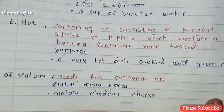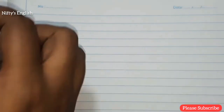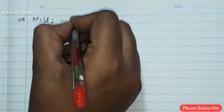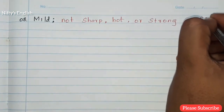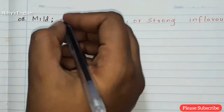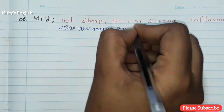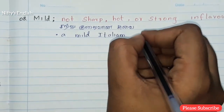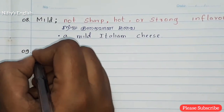The eighth one is mild — such a sweet, gentle flavor. Mild means soft and not strong in taste. For example: a mild Italian cheese.